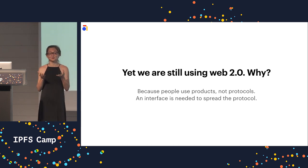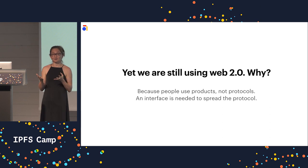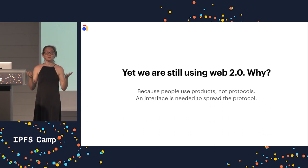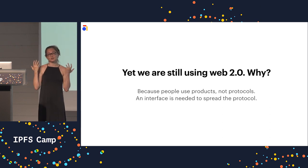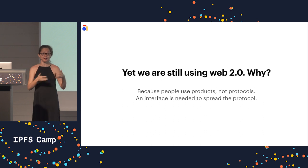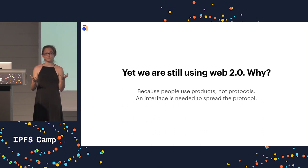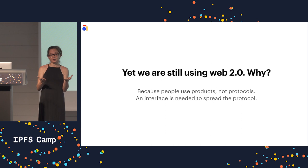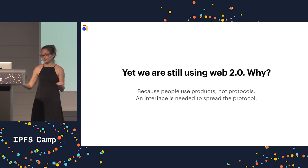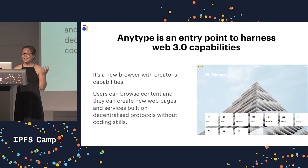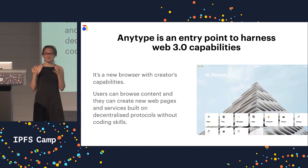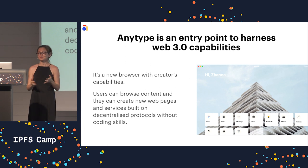So an interface is needed to spread the protocol — the same, for example, as IMAP for email, where a free email client was this interface, or a mosaic browser for HTTP, or a wallet for Bitcoin. And we think AnyType is this missing piece — an entry point to harness Web 3.0 capabilities.